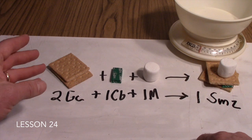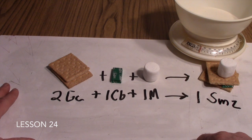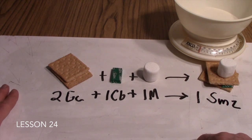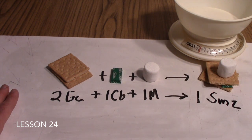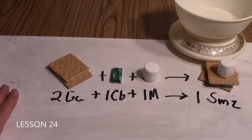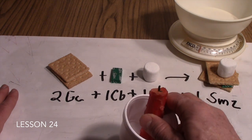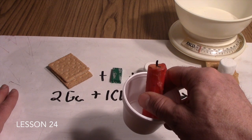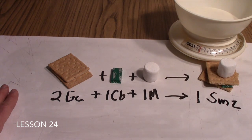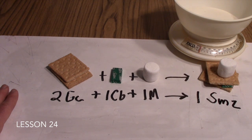For this activity, you will need a supply of s'mores ingredients and a kitchen scale. And if you choose to allow your students to cook their s'mores, you will also need a heat source and a fork to toast the marshmallow.